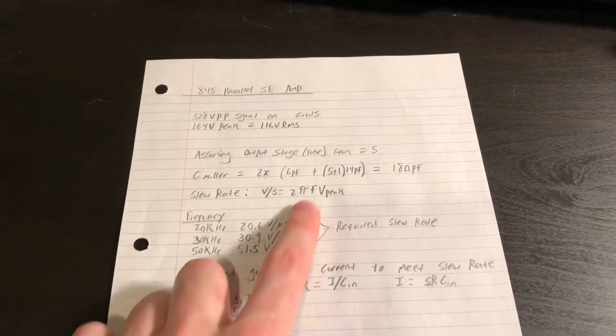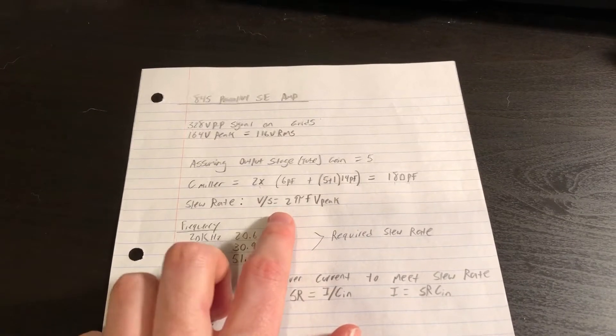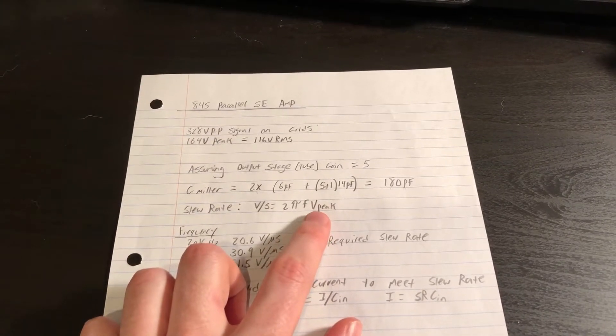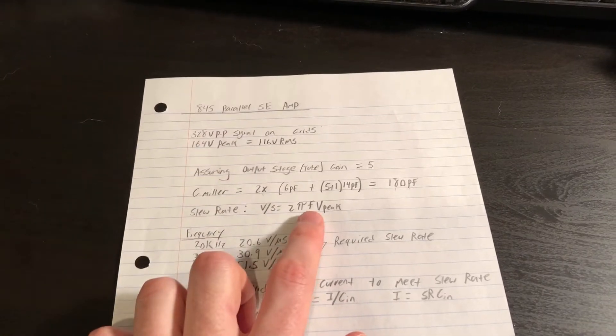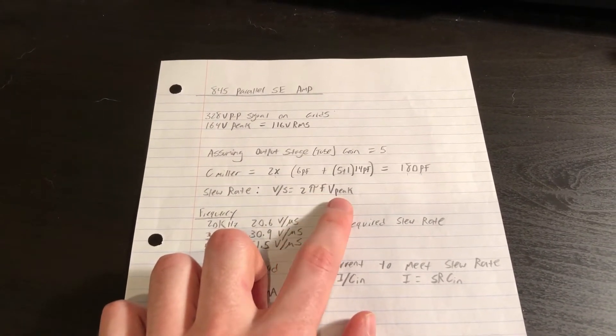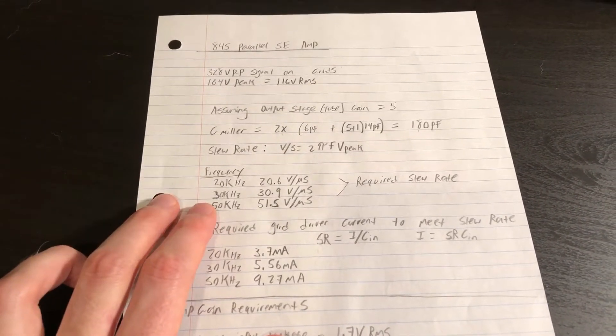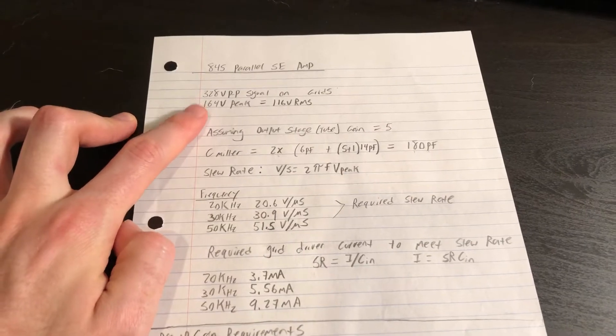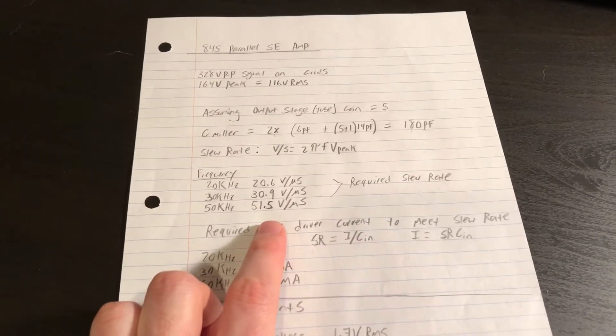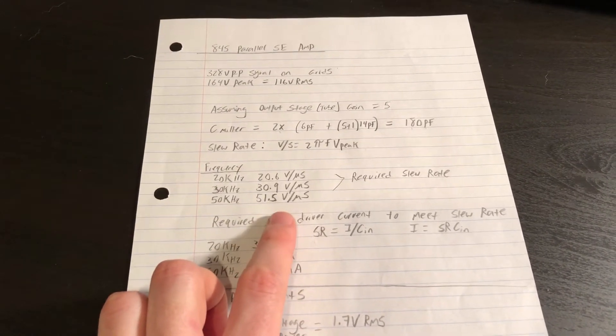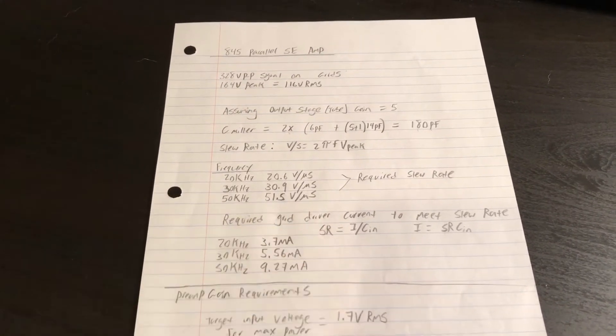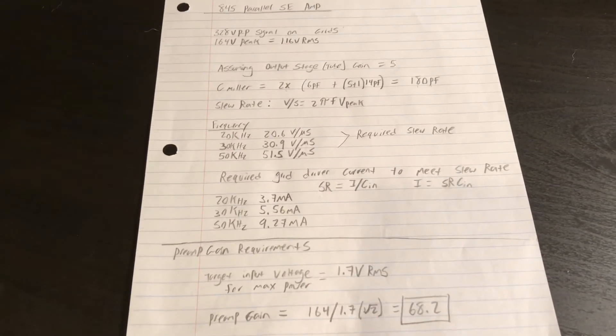If we consider that 180 picofarads and calculate the slew rate requirement, slew rate being 2 pi, your target frequency times V peak, V peak is our 164 volts on our grid, F is the highest frequency we want to operate the amp while maintaining that grid voltage, we can calculate the required slew rate. And because the capacitance of this tube is high, or parallel 845s is high, and the signal swing on the grids is high for this tube, the slew rate requirements become pretty substantial. And this is why an 845 amplifier is traditionally very hard to drive. And to make it sound good, you need an extremely robust driver stage that can drive the grids. Otherwise, this amp is not going to sound very good.